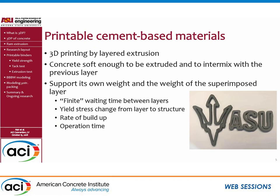Most of us mainly focus on layered extrusion. The material should be soft enough to be extruded while it should intermix with the already laid layers so that it has a stable structure. As you go on printing layer-by-layer, the layers beneath the current layer should be able to hold the weight of the layers being laid. If the material is not able to hold that weight, which depends on the yield stress of the material, it won't be able to be stable.